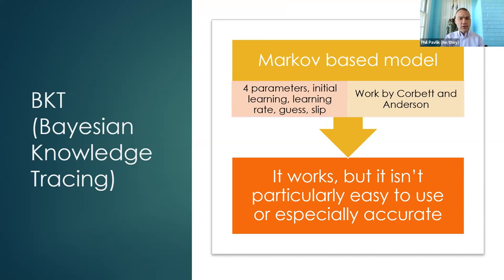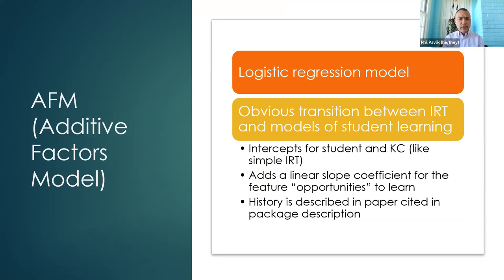Early on I decided to adopt a more logistic regression formalization. The earliest type of logistic regression used like this is essentially the Additive Factors Model (AFM). It's useful to start with AFM because it's the obvious transition between item response theory and models of student learning when you're talking about regression. AFM still has the important parameters describing item difficulty and student proficiency that IRT does, but it adds just one simple additional term: a linear slope.